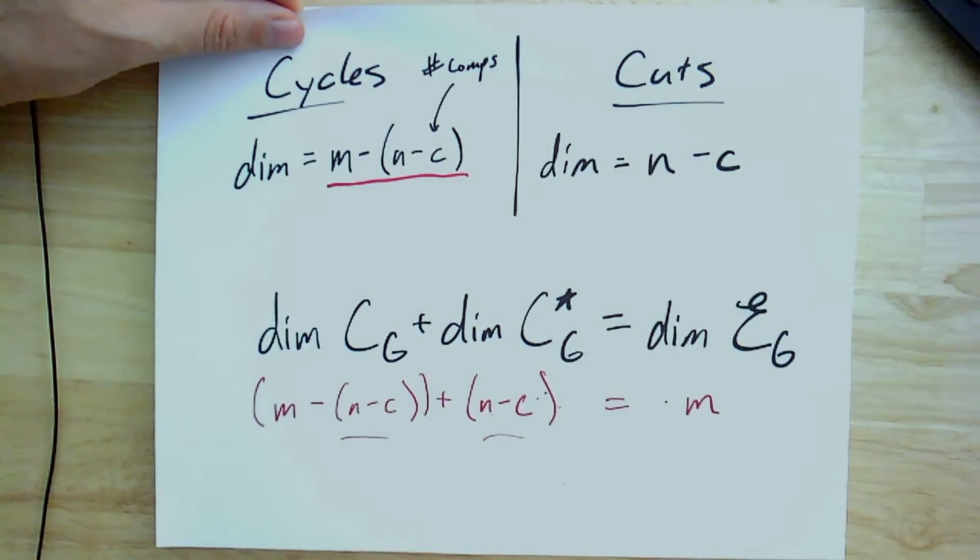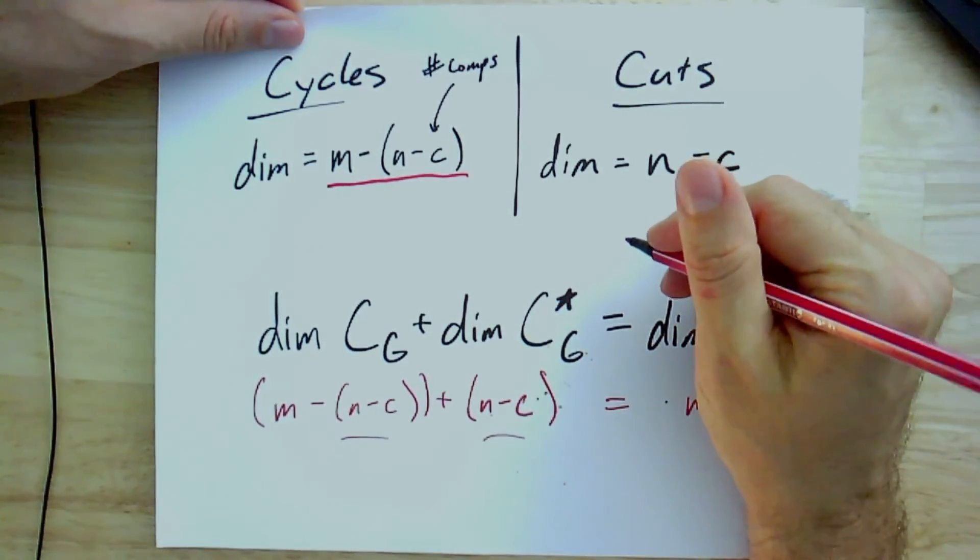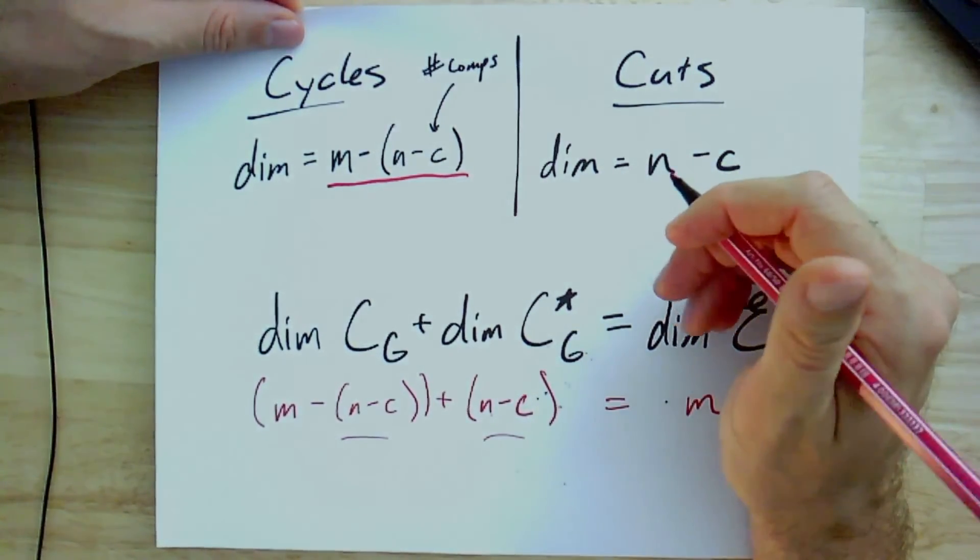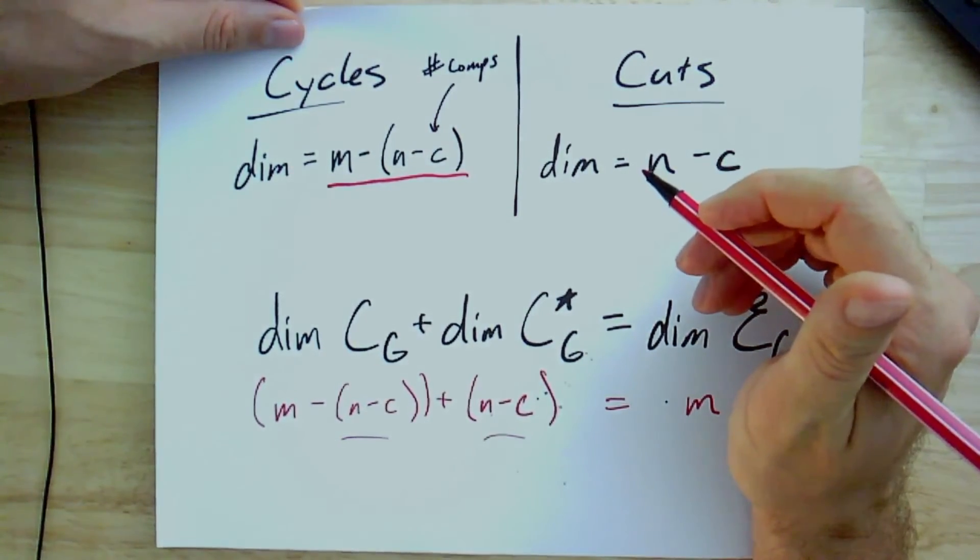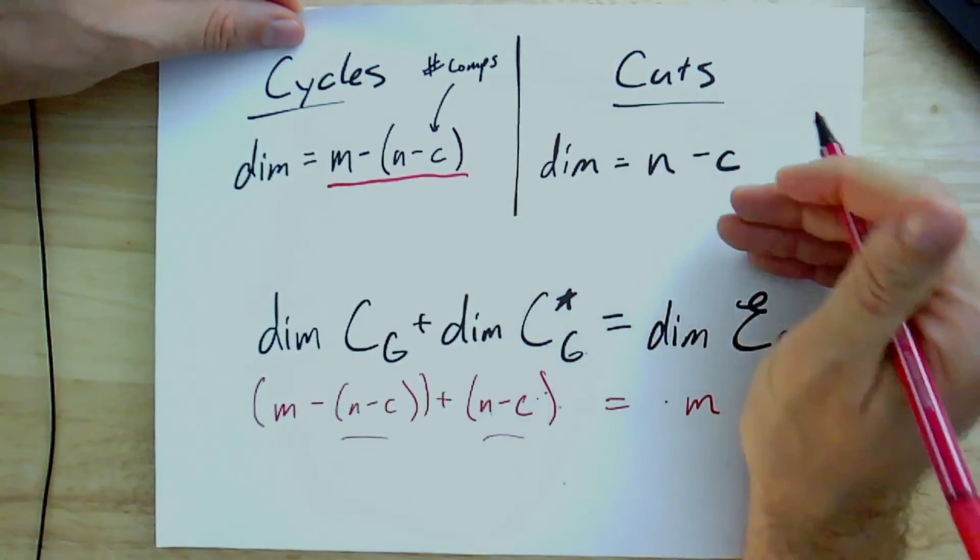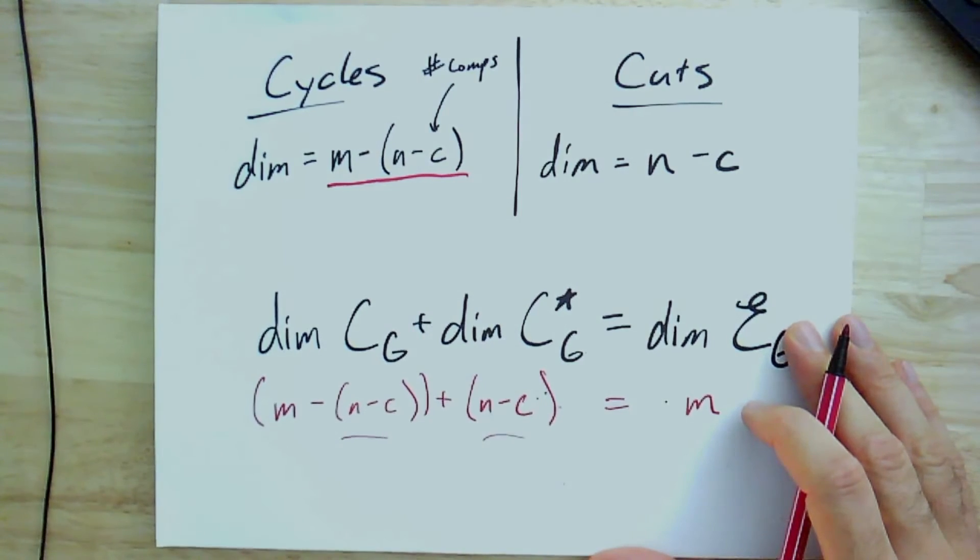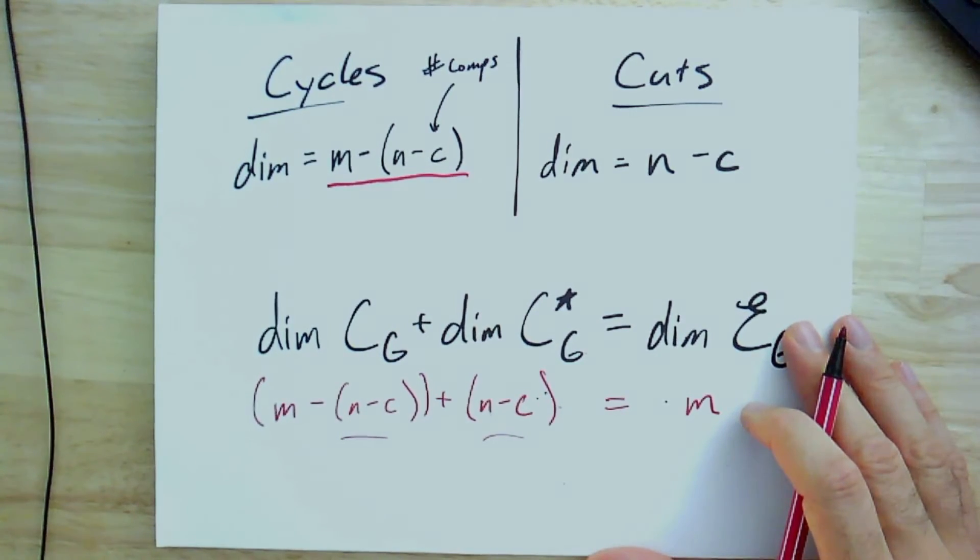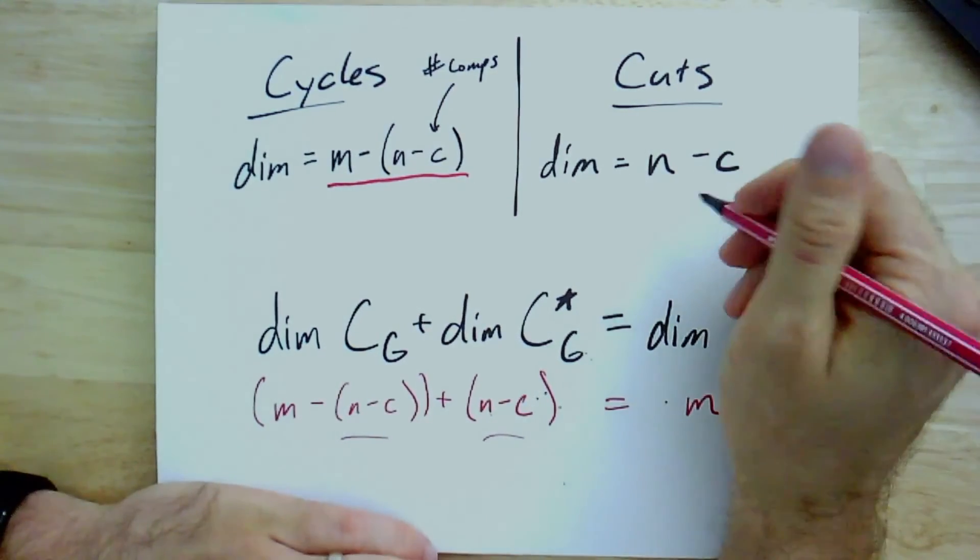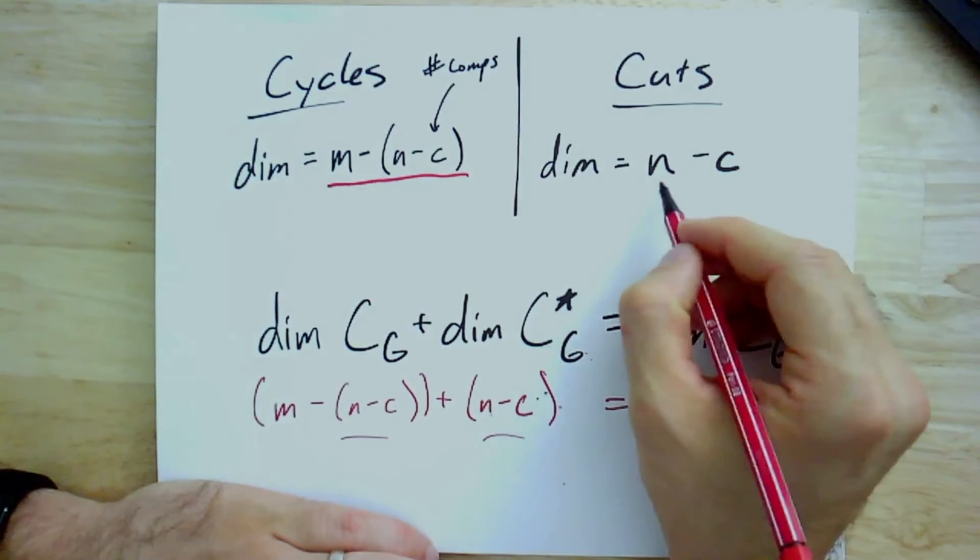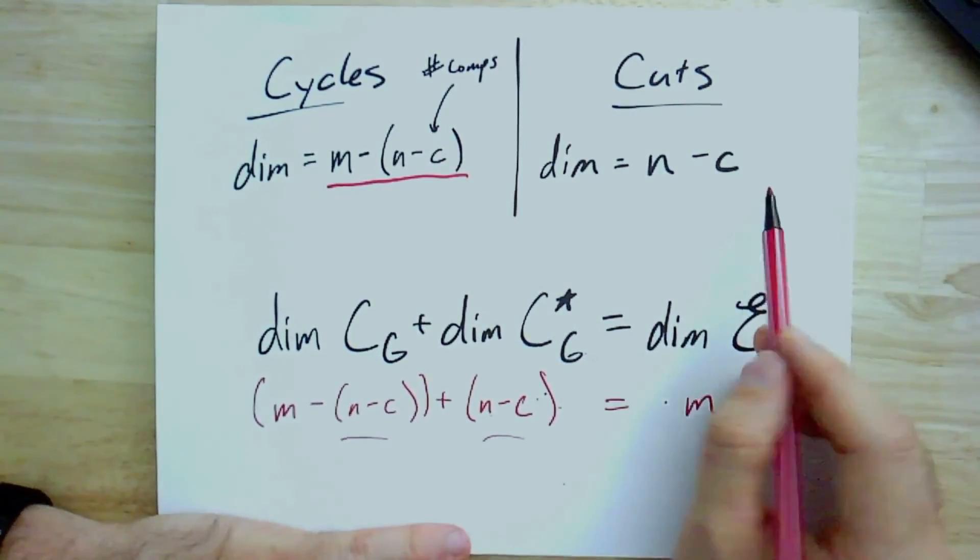And the easiest way to see that is that for any graph G and any subset of vertices U, the complement of U would actually give you the same cut. So if you just take the set and its complement, you get the same cut. It means you have two different elements of the vertex space mapping to the same cut in the cut space. And so with a little care, you can see that this dimension really is going to be n minus the number of components.